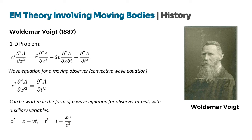To achieve this, Voigt introduced a set of auxiliary variables, allowing the wave equation to be analyzed in the moving frame where the observer is stationary. For a one-dimensional problem, Voigt considered the convective wave equation, where A represents the wave amplitude, C is the wave speed (either the speed of light for electromagnetic waves or the speed of sound for acoustic waves), V is the observer's velocity, X is the spatial coordinate, and T is time. By introducing new auxiliary variables, he was able to write the equation in a simpler form that describes wave propagation as seen by an observer at rest.